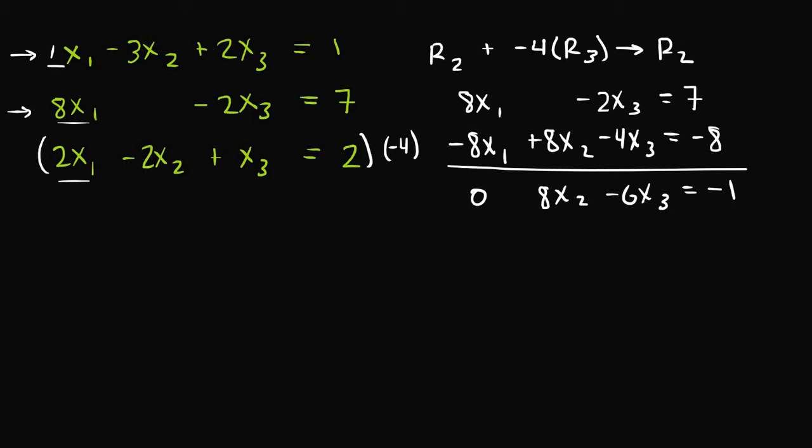So now our new equivalent system is x1 minus 3x2 plus 2x3 is equal to 1. 8x2 minus 6x3 is equal to negative 1. And finally, 2x1 minus 2x2 plus x3 is equal to 2. So great, we have a 0 term here.